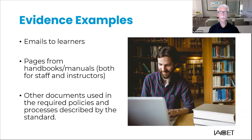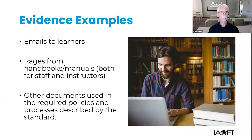Here are some other examples of evidence. Your process for how you communicate important information to the learner prior to the learning event might involve sending an email to learners after they register — you would submit an example of that email to an actual learner, not the template of the email. Evidence could also be pages or excerpts from a handbook or manual. In this case, we would ask that you highlight or somehow draw attention to the specific information you're asking commissioners to evaluate. If you submit a large document and leave it to the commissioners to hunt for what you want them to see, you do run the risk that we won't find it and we'll end up returning your application asking for clarification. You may redact any identifying information on evidence that would relate to personal identity. The IACET Accreditation Management System requires that you prepare evidence documents in PDF format in order to upload them as part of your application.